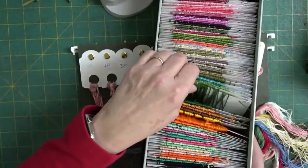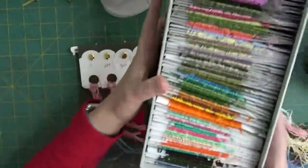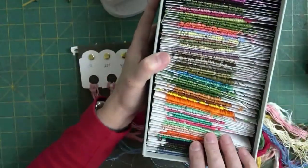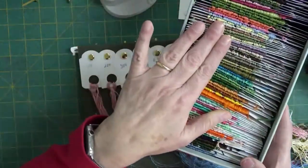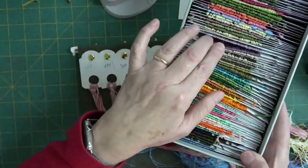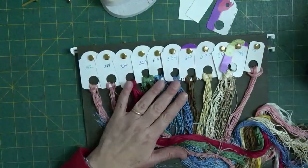So right now I have all of my floss stored on these 3x5 cards that I cut, and I've got them in a cute little box. So I like it because I can see my colors and I can easily get them out, although it's not as easy...